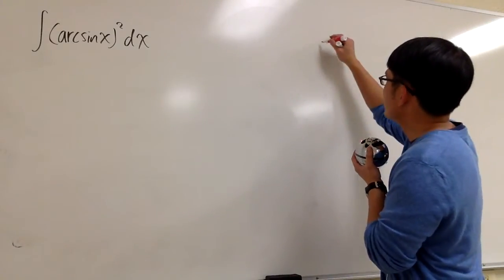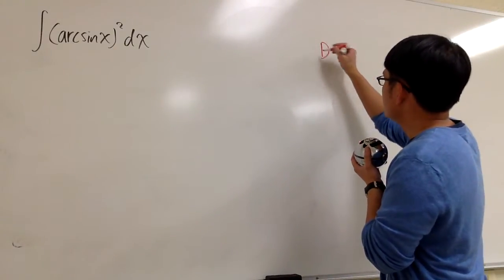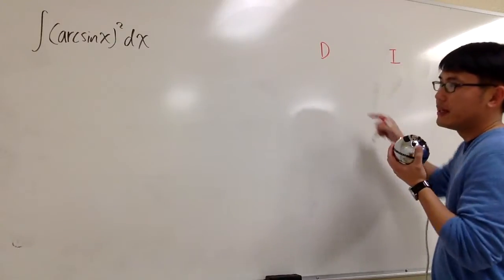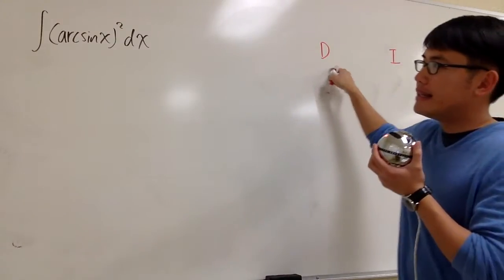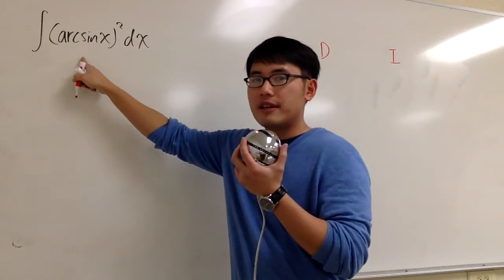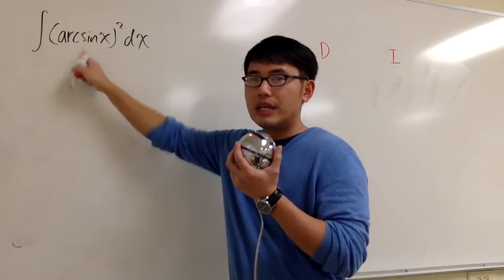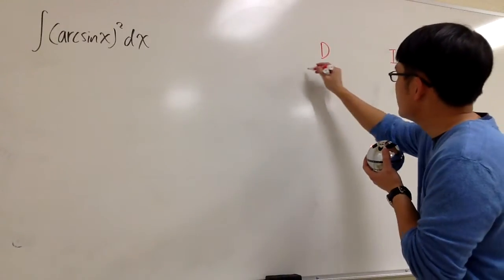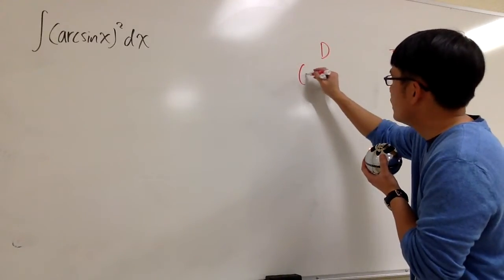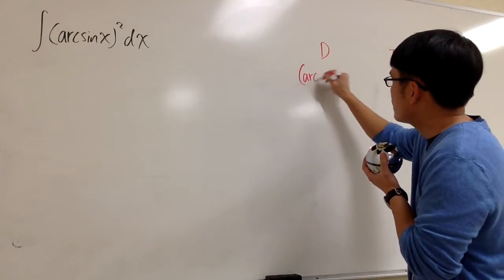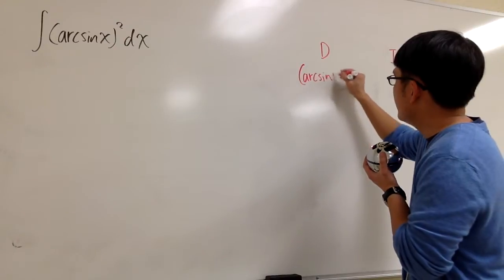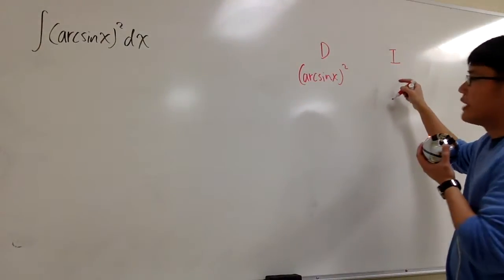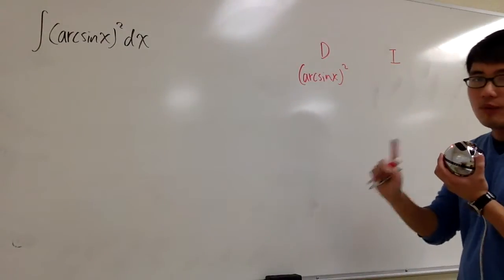For the DI method, I'm going to pick something to be differentiated and then something to be integrated. We only have one thing here: arcsin x to the second power. Let's put that in the D column, so under D we have arcsin x squared, and under the I column we have 1.